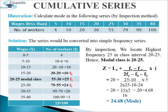For that, we will make a table of two columns. In the first column, we will write wages, denoted by X. In the second column, we will write number of workers, denoted by F, that is frequencies. In the column of wages, we will write class intervals: 0 to 5, 5 to 10, 10 to 15, 15 to 20, and so on. Because we have a less than series provided, we will start with 0. In the second column, we will write number of workers, that is frequency.